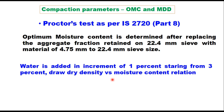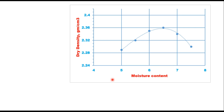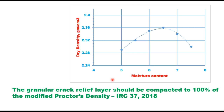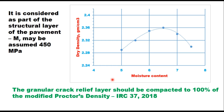Water is added in increments of 1% starting from 3%, and the dry density versus moisture content relationship is plotted to determine the OMC and MDD. IRC 37 suggests that the granular crack relief layer should be compacted to 100% of the modified proctor density in the field. This layer is considered part of the structural layer of the pavement, and when analyzing using IIT Pave software, the resilient modulus value can be taken as 450 MPa.